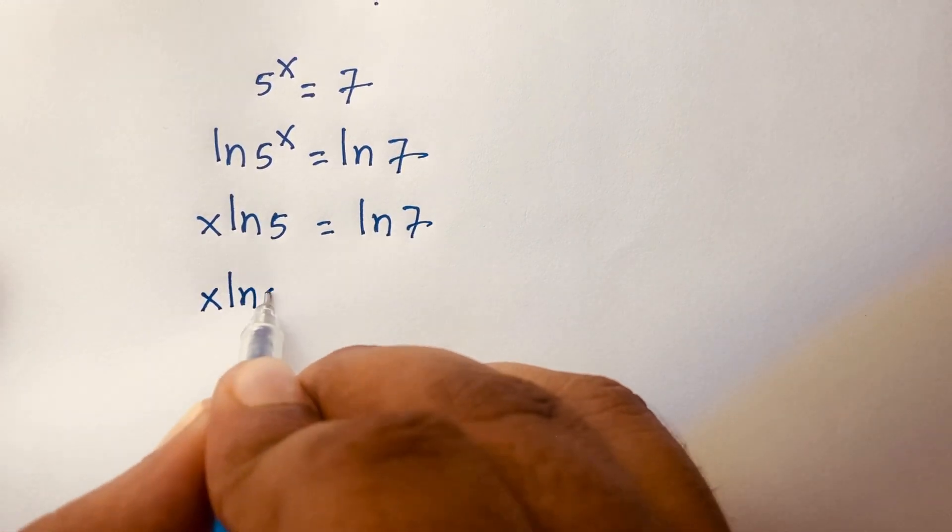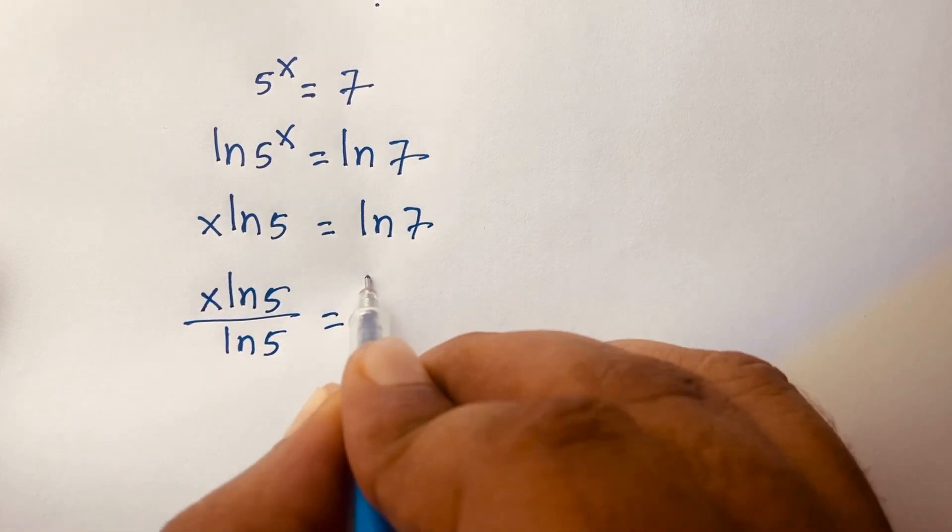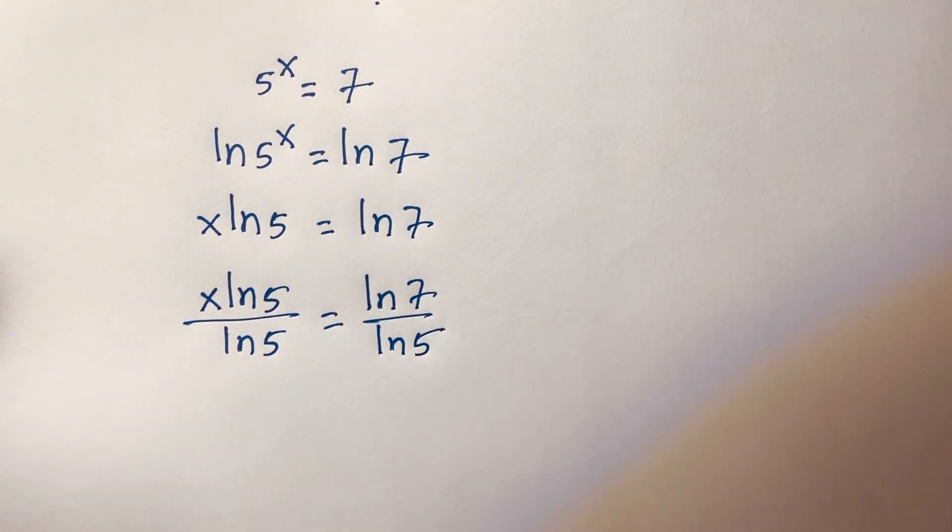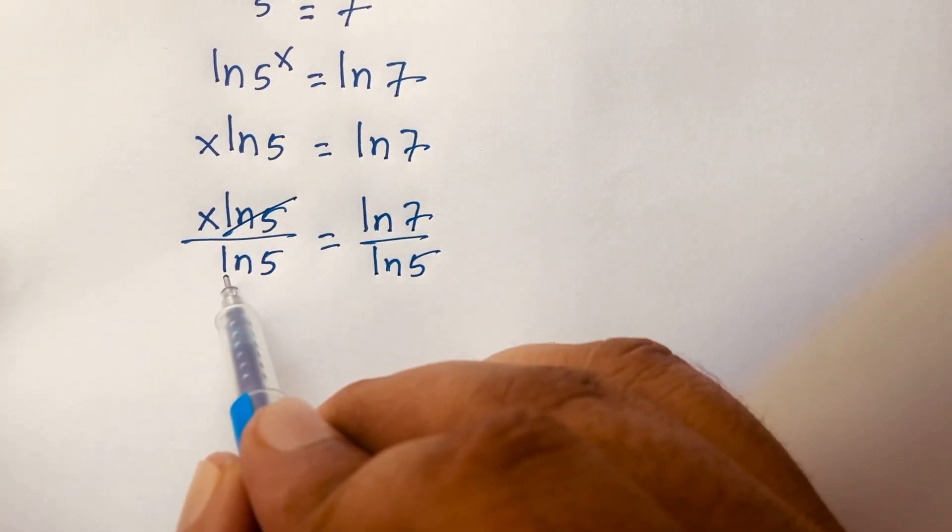So in this case I can say x ln 5 over ln 5 is equal to ln 7 over ln 5. Then I can easily see this ln 5 and this ln 5 cancel.